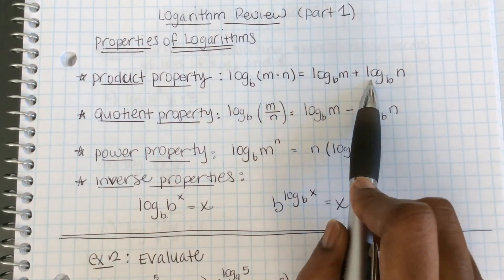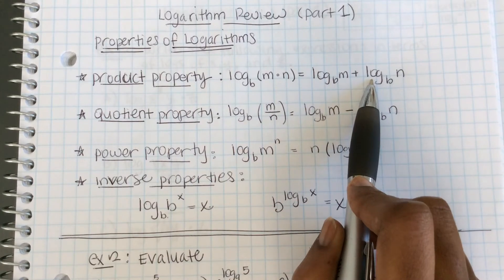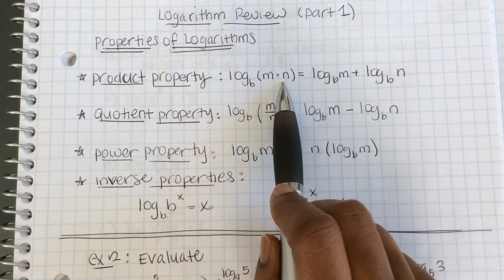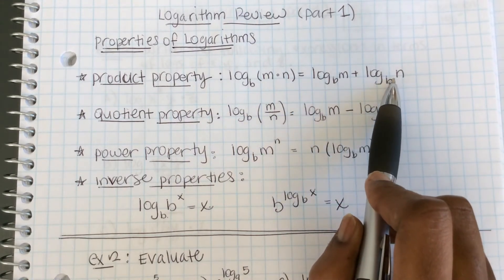Thinking of logarithms as being exponents, log of m times n is log of m plus log of n.